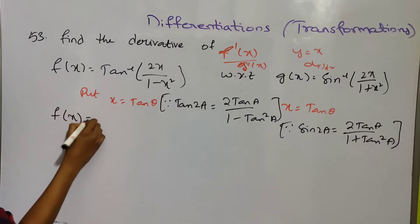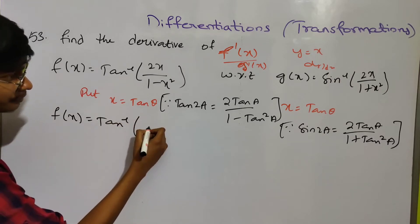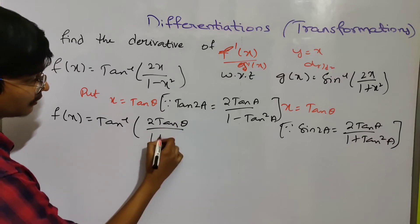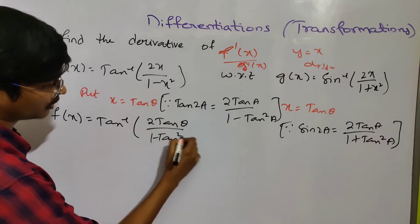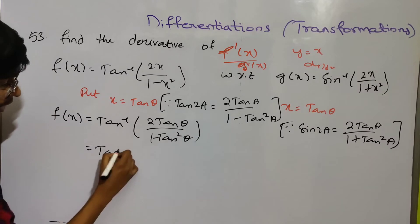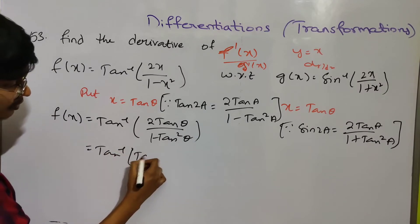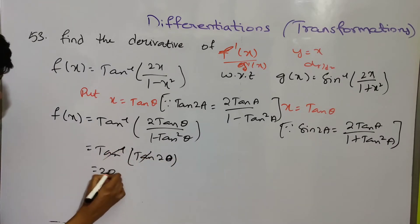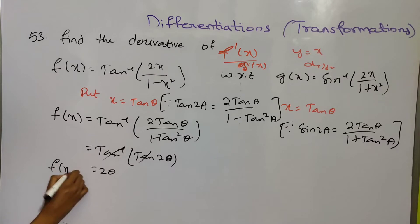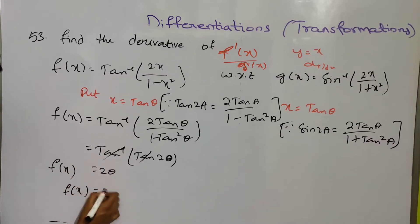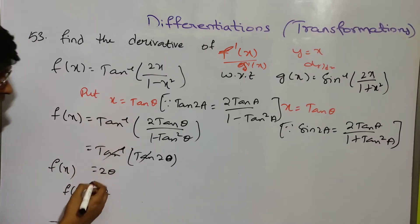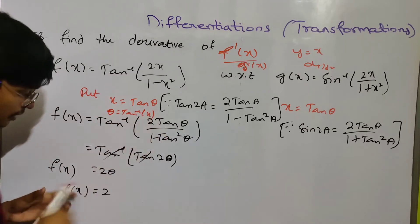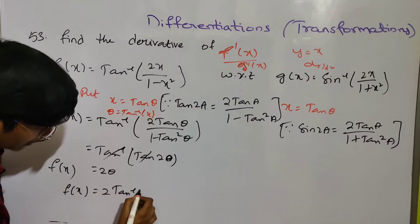f(x) equals tan inverse of 2 tan θ by 1 minus tan squared θ. So tan inverse of tan 2θ. Tan and tan inverse cancel, giving 2θ. Since θ = tan⁻¹x, this equals 2tan⁻¹x.